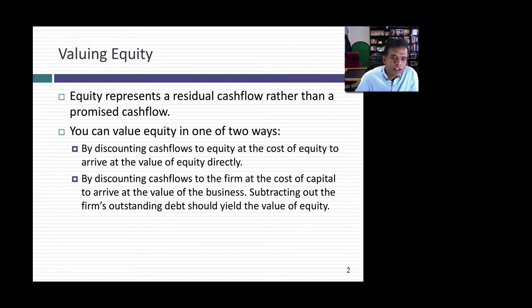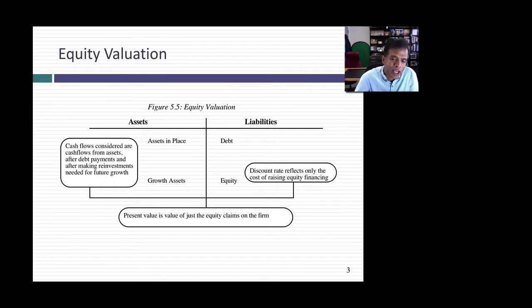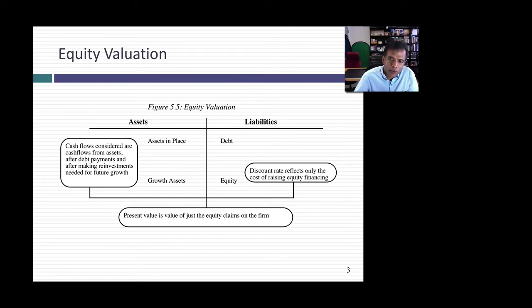In an equity valuation, the cash flows you're looking at come from both assets in place and growth assets, but after reinvestment needs and after debt payments — interest payments and principal payments. To the extent that you borrow money to fund projects, think of that as a cash inflow. The discount rate you use reflects the risk in that equity — it's the opportunity cost, what you can make on other equity investments of equivalent risk. What you get as a present value is the value of equity in the business.